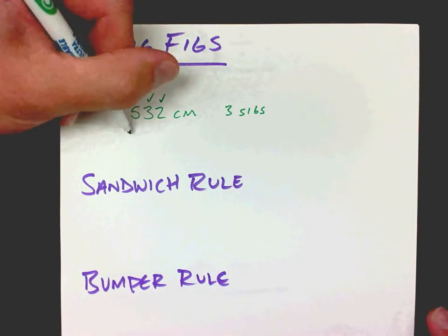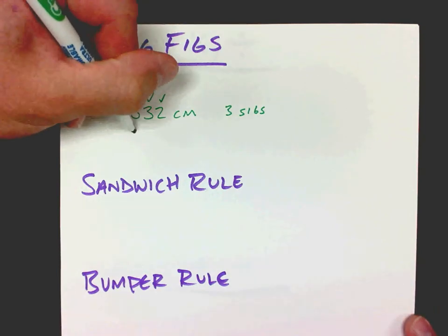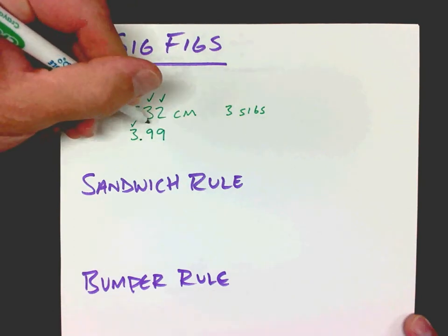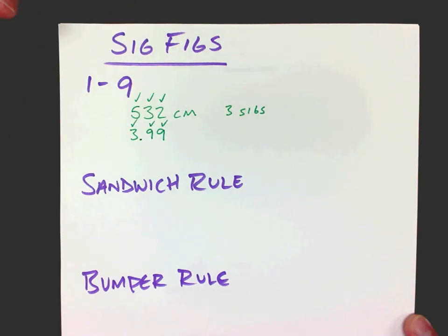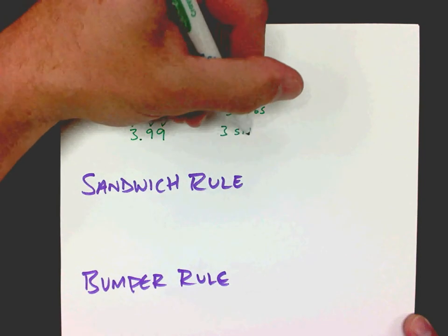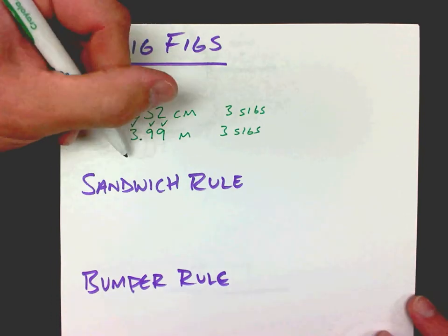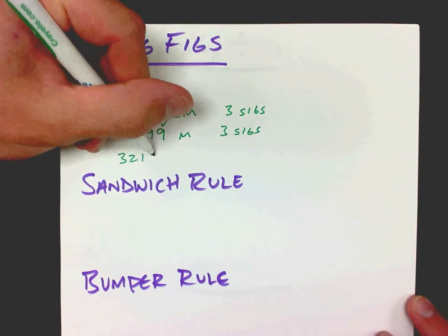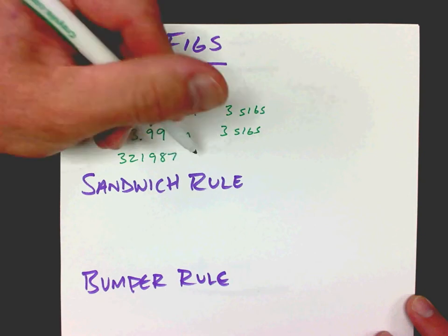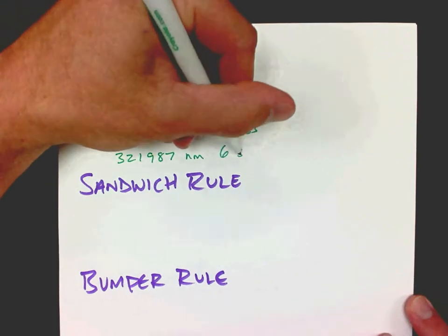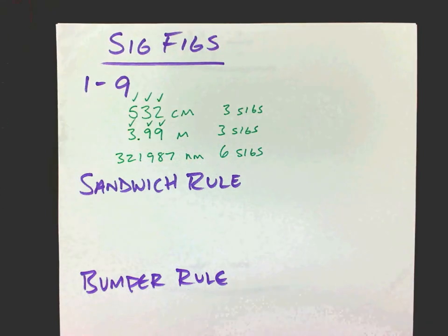This works the same whether there's a decimal point or not. So if we have 3.99, we've got a 3, a 9, and another 9 — that's 3 sigs. I should put a unit on there because this is only with measurements. We could go on further: 3, 2, 1, 9, 8, 7 nanometers — in that case we would have 6 sig figs.